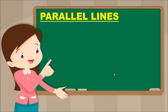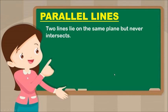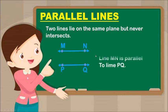Next is Parallel Lines. Two lines that lie on the same plane but never intersect — they never touch each other, so they are parallel. This figure is read as Line MN is parallel to Line PQ.